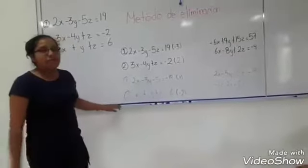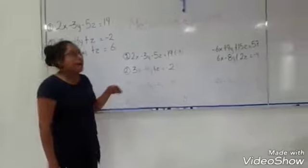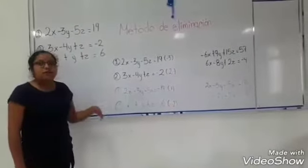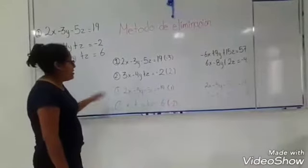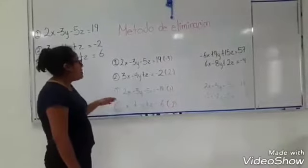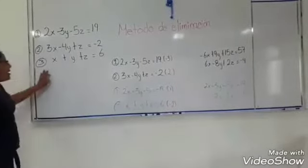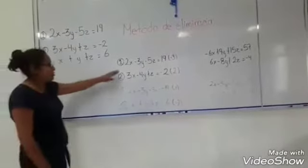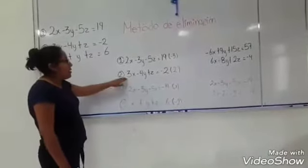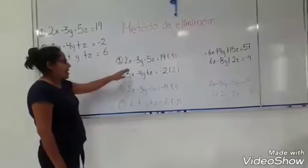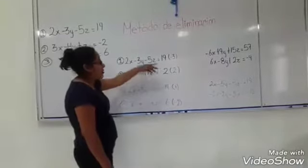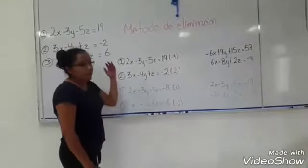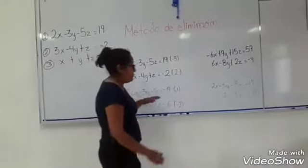El siguiente método que vamos a utilizar es el método de eliminación. Este método consiste en eliminar uno de los 3 términos para encontrar el valor de X, Y o Z. Tenemos 3 ecuaciones, y como primer paso vamos a ocupar las dos primeras. Para poder eliminar a las X, tenemos que multiplicar por menos 3 y por menos 2 cada uno de los términos, para obtener una nueva ecuación.